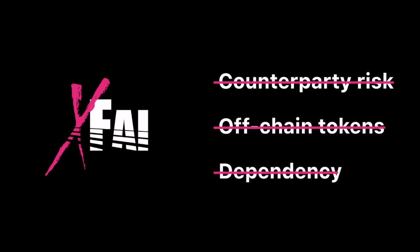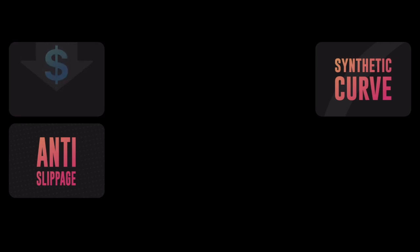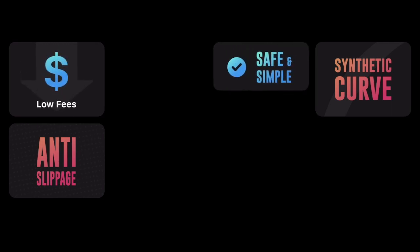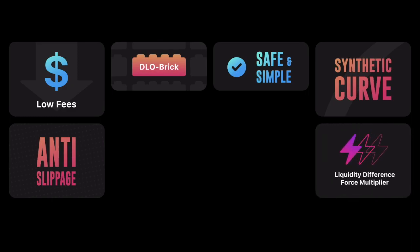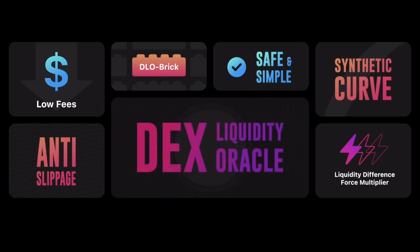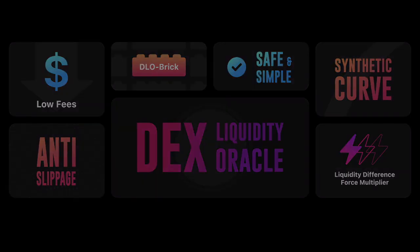No tokens are ever sitting off-chain, and we are never dependent on exchanges except for data feeds. Our specific anti-slippage technology, combined with our synthetic curve, alongside the fee benefits guarantee, the simple single-token approach, the DLO brick, and our powerful liquidity difference force multiplier, all integrate seamlessly into our XFI DEX Liquidity Oracle. This is a unique and industry-leading approach, and nobody is doing anything even close. Thank you.